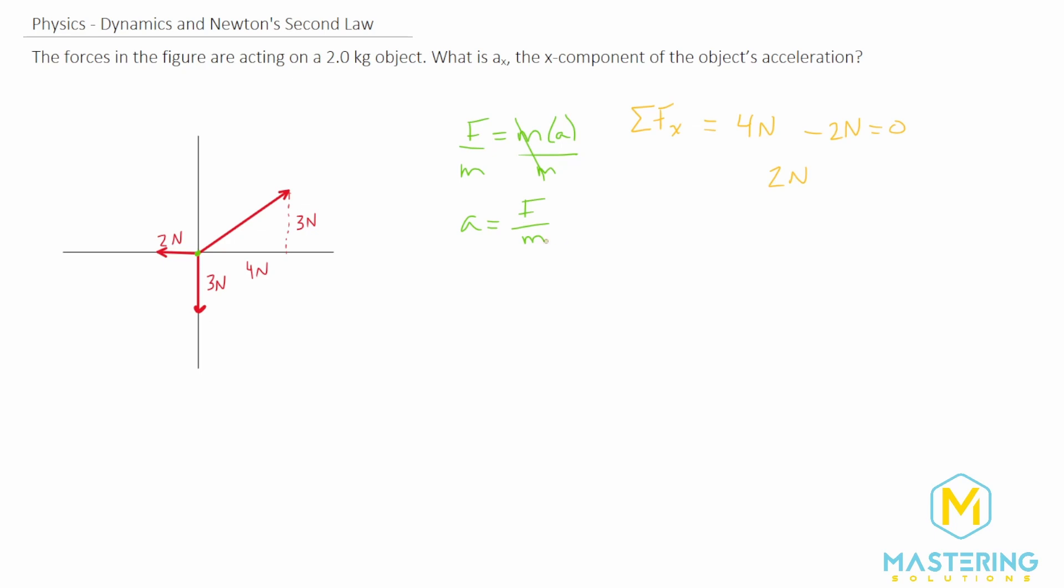So now using this for only the x direction, acceleration in the x is equal to the forces, which we just said is two newtons in the x direction, and we'll divide that by the mass which is two kilograms. So the acceleration in the x direction is one meter per second squared.